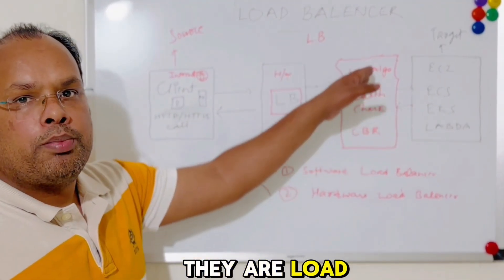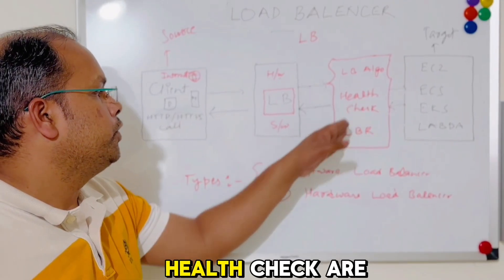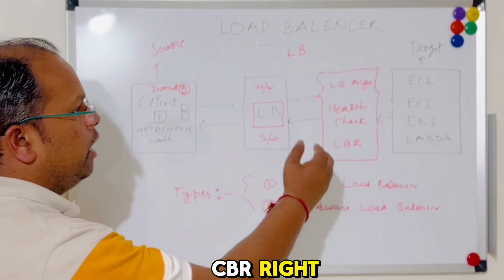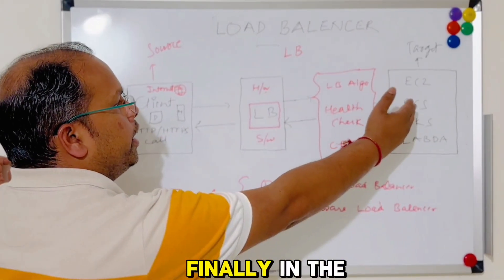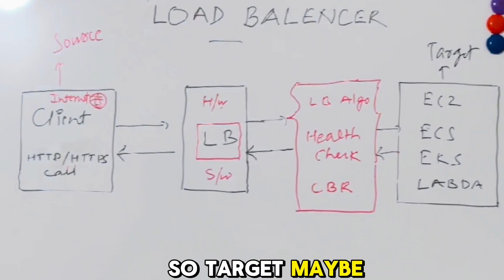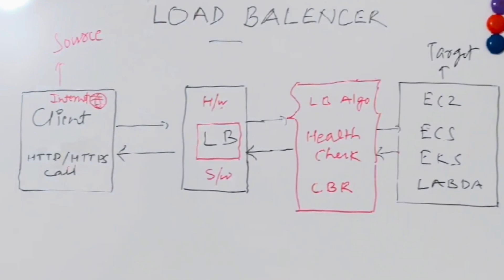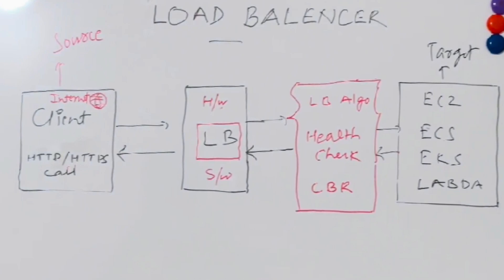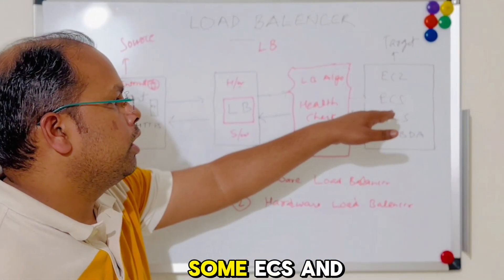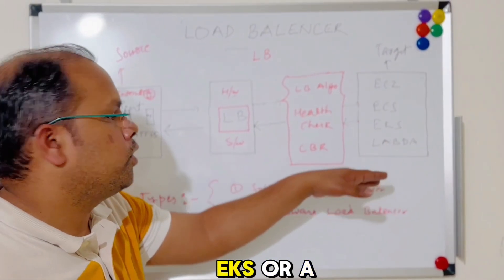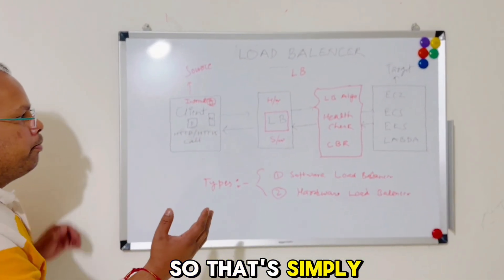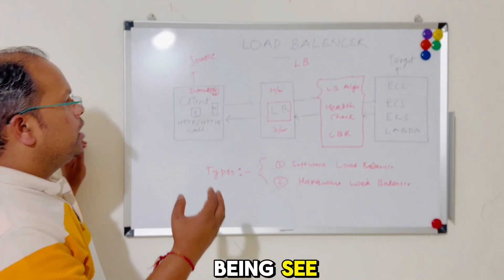The load balancer involves algorithms, health checks, and CVR. Finally, the target — which may be a pool of EC2 instances, meaning you have 10 EC2 instances, or maybe ECS, EKS, or Lambda. The load balancer is balancing across those 10 EC2 instances.